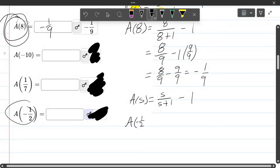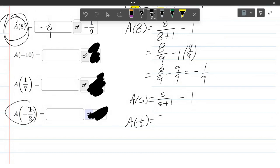So we have negative 1 half. So it's negative 1 half divided by negative 1 half plus 1 minus 1.